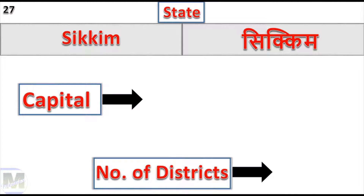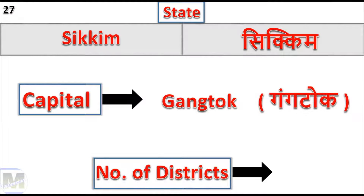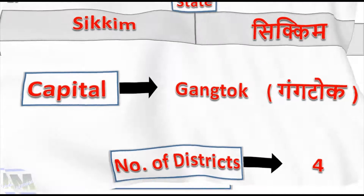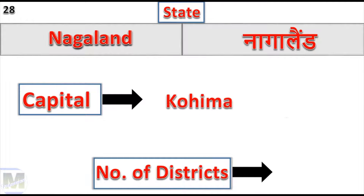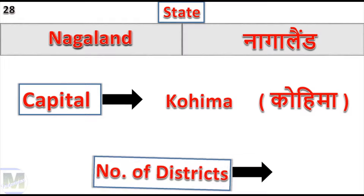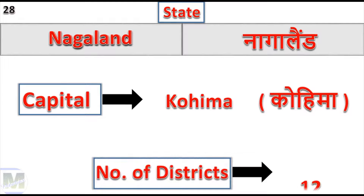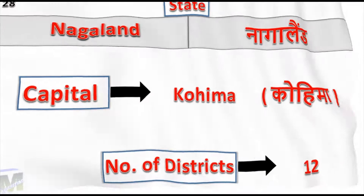Sikkim: Capital Gangtok, Number of Districts: 4. Nagaland: Capital Kohima, Number of Districts: 12.